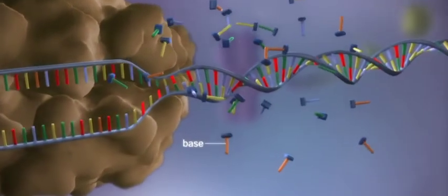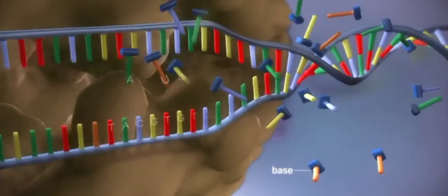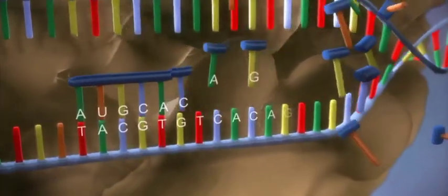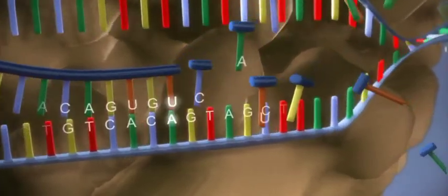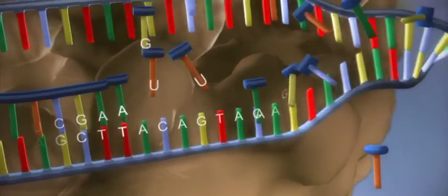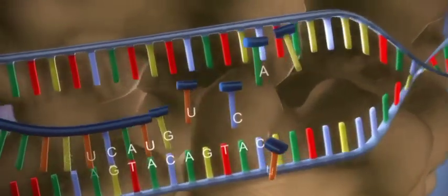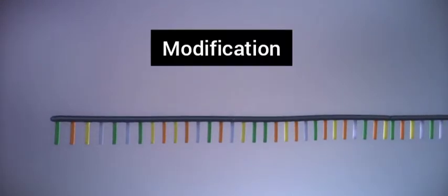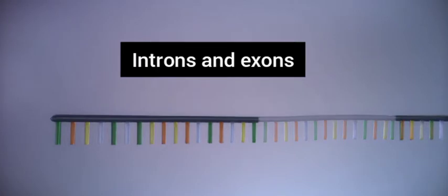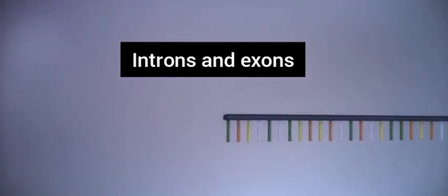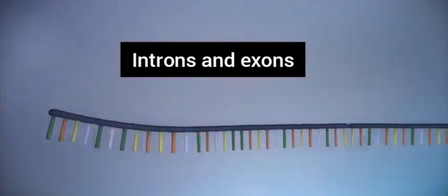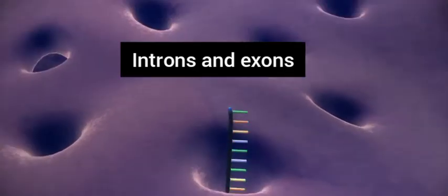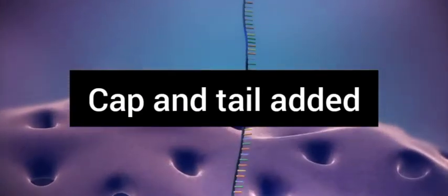RNA Polymerase makes copies from the DNA. It slides along the DNA strand and messenger RNA begins to form and exit. As you can see here, this is the messenger RNA. The messenger RNA then undergoes further modifications — it contains introns and exons. The introns are removed because they are non-coding, and the exons are joined together.